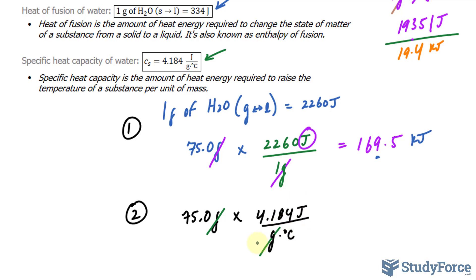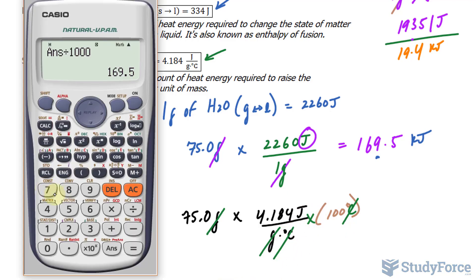Now we want the amount of energy, so we're going from 100 degrees to zero, so I'll multiply this by 100 degrees, and that's degrees Celsius. This will cancel out with that, and this is being multiplied. So let's go ahead and find out what this is. 75.0 times 4.184 times 100, and we get 31,380 joules.